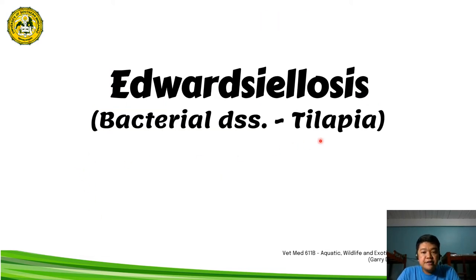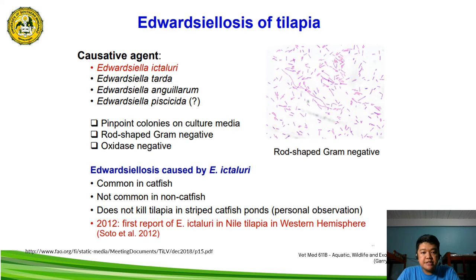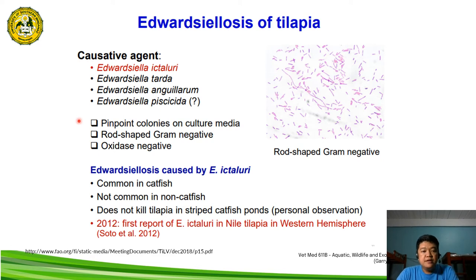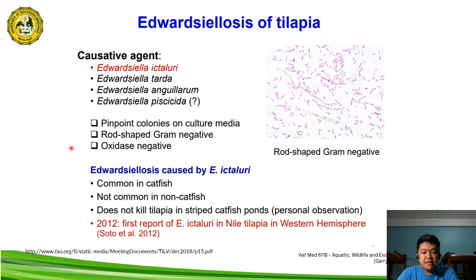Another bacterial disease of tilapia is edwardsiellosis. The causative agents are Edwardsiella ictaluri, tarda, anguillarum, and piscicida. These exhibit pinpoint colonies in culture media. They are rod-shaped, gram-negative bacteria. Biochemically, they are oxidase-negative.